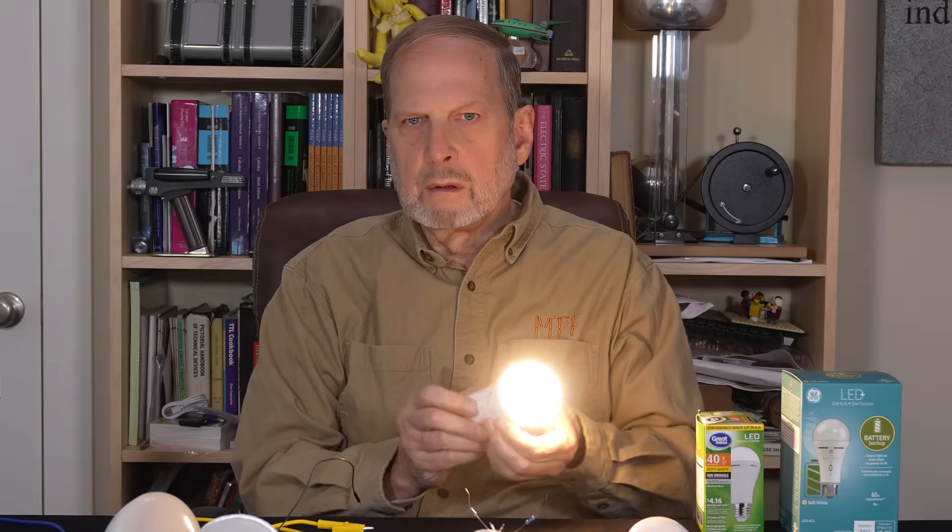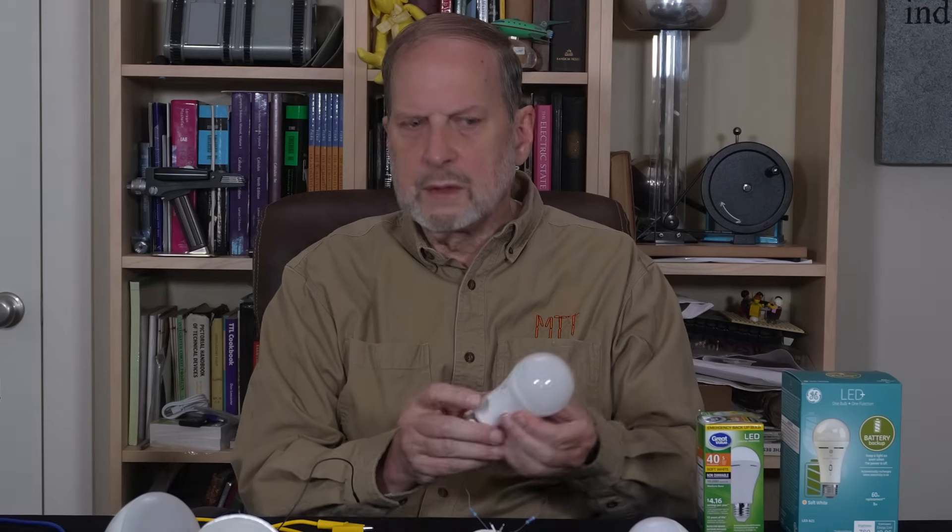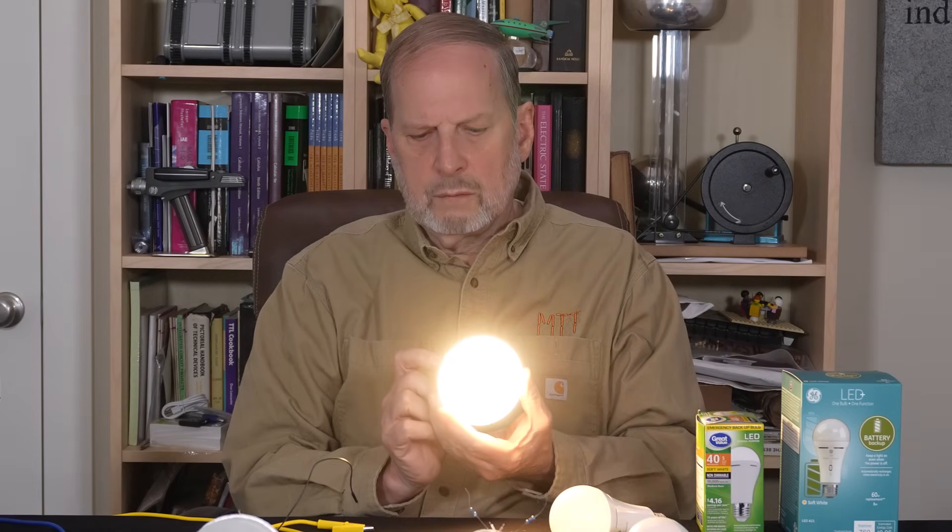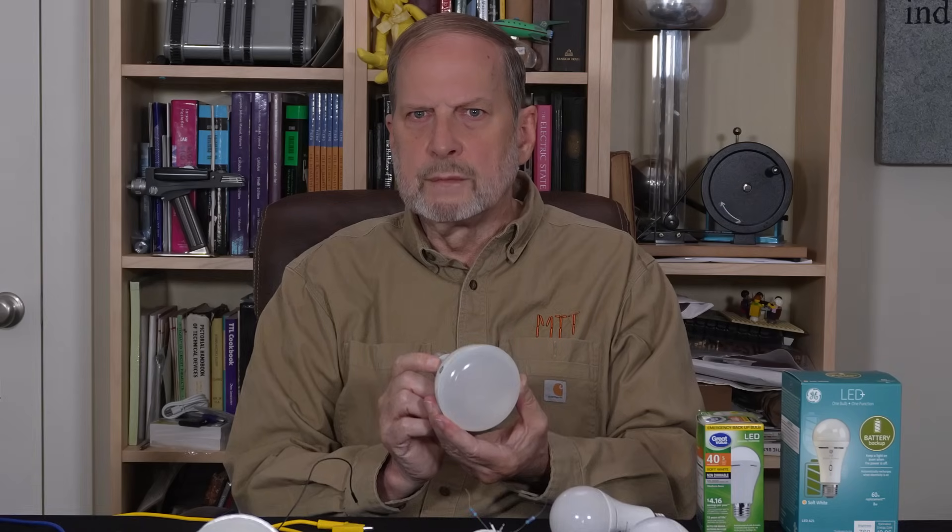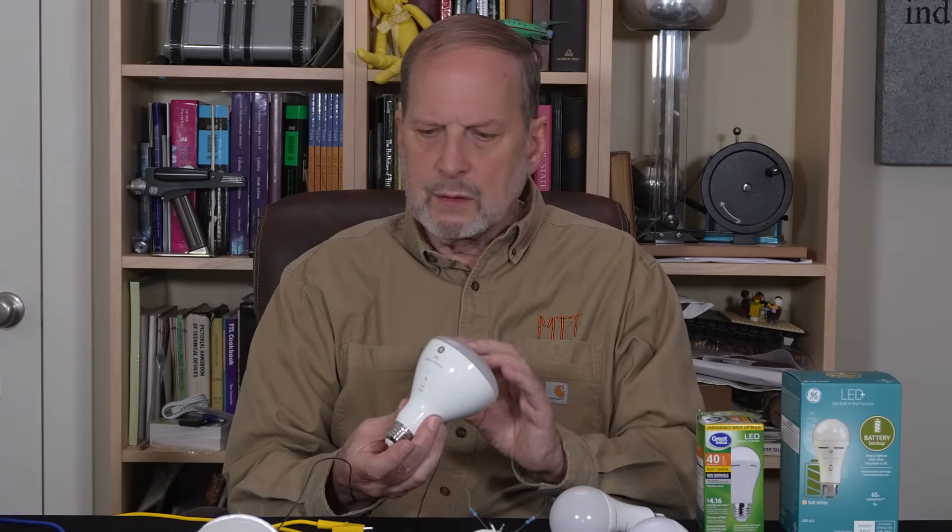They come in a regular bulb configuration and a reflector bulb configuration. One of the things you have on some of the higher end ones is a little switch right here, which allows you to effectively use it as a flashlight if it's fully charged. And they charge themselves when they're being used. I like these reflector ones. A lot of homes today use the can lights with reflectors, and so it's nice that they have one like that. I've used these in my own home.